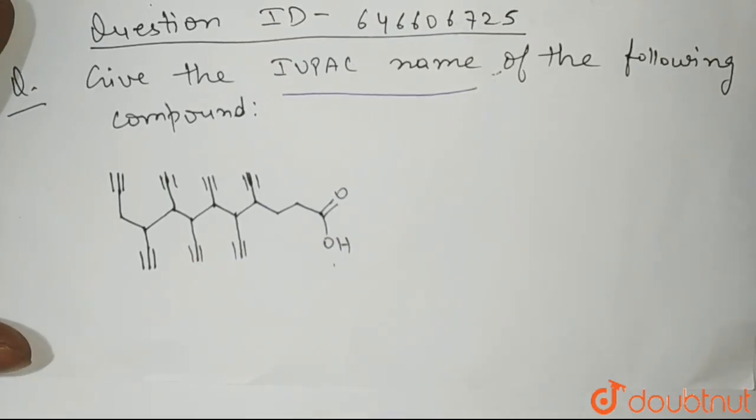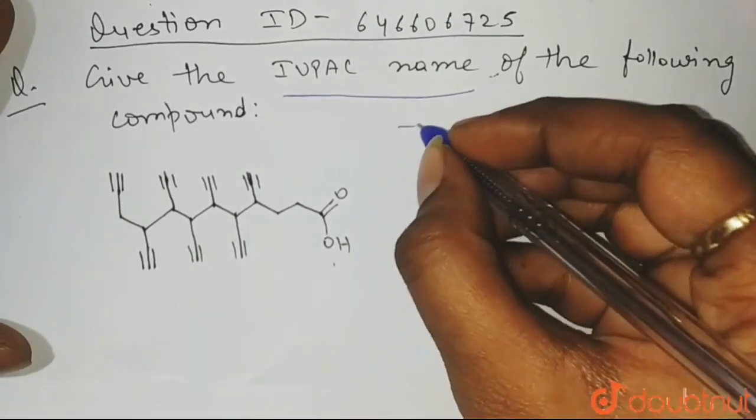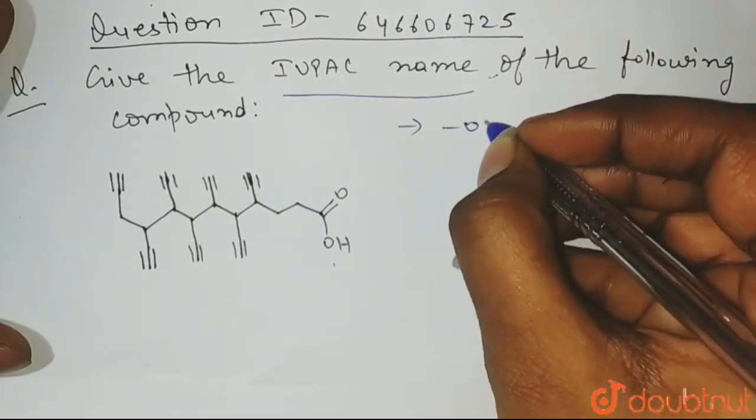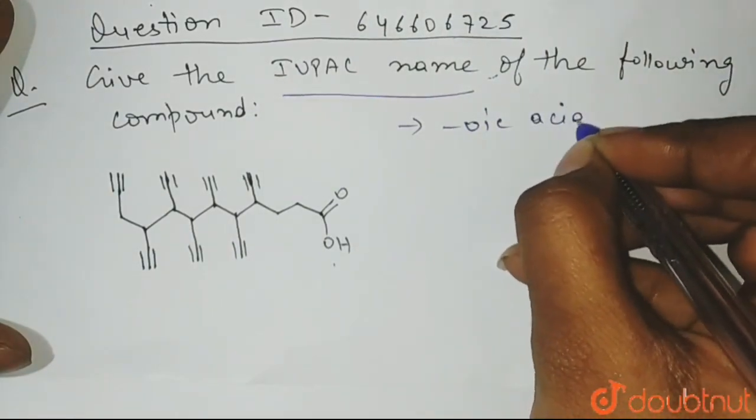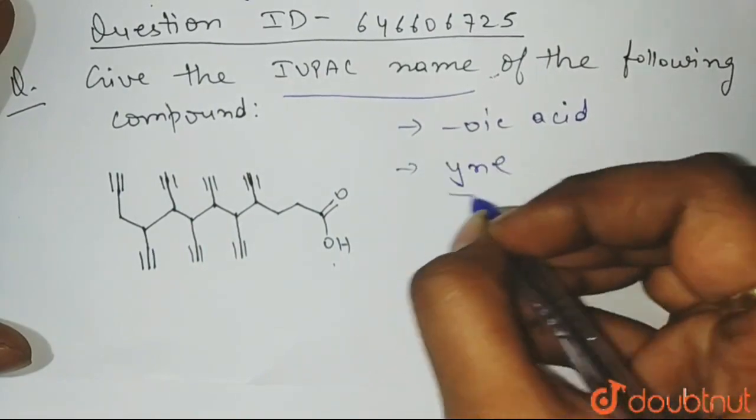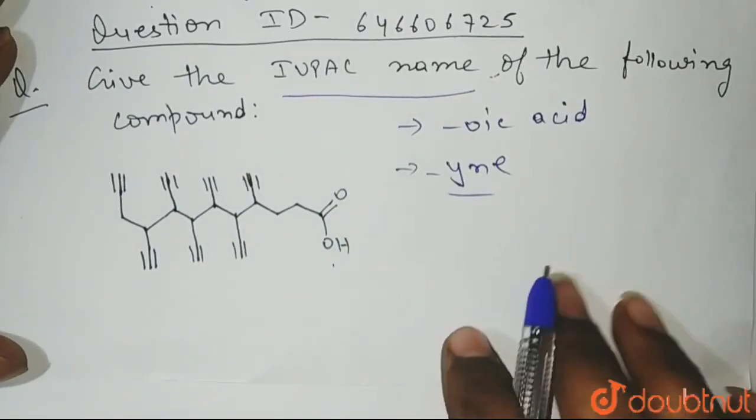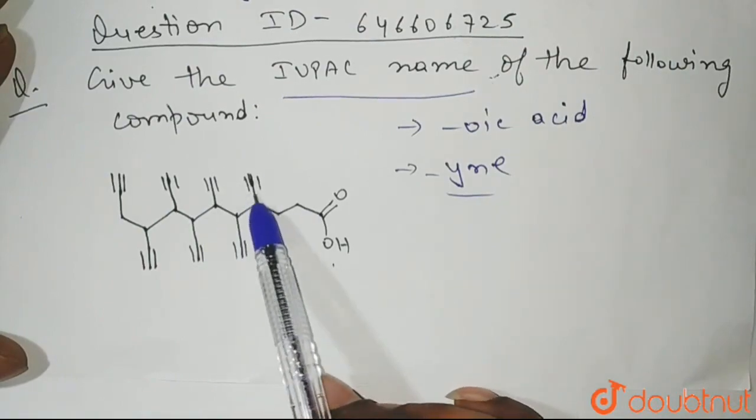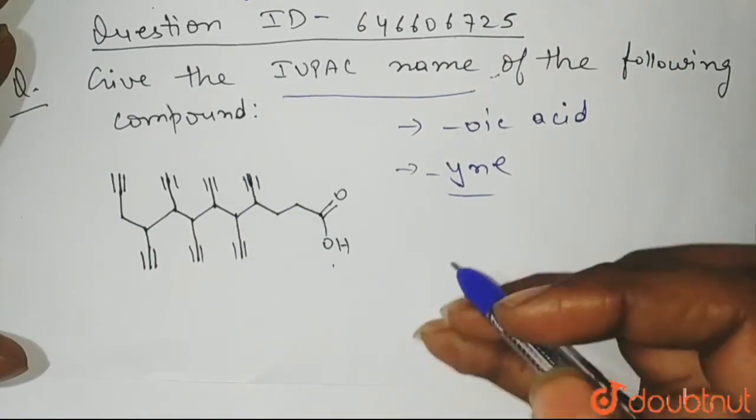And we know that the suffix used for carboxylic acid is oic acid, right? And for the triple bonds, we use yne. And whenever triple bond is present as a substituent, we use what?